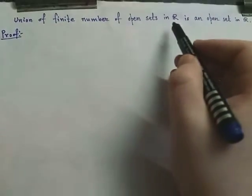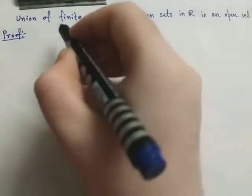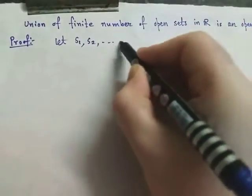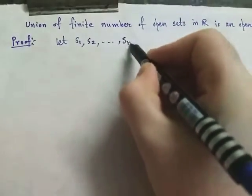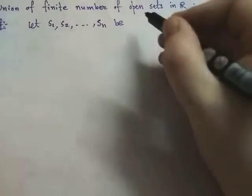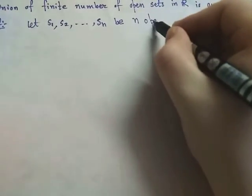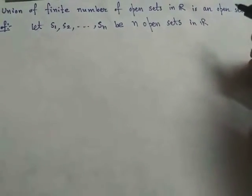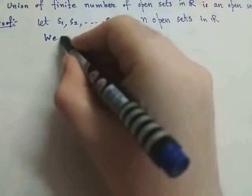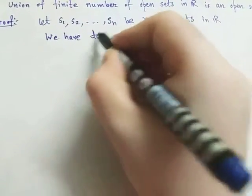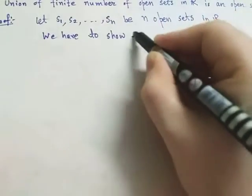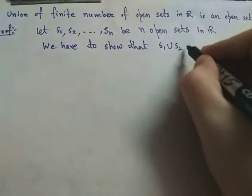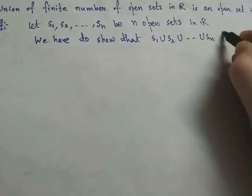Union of finite number of open sets in R is an open set in R — proof. Let S1, S2, ..., Sn be n open sets in R. We have to show that S1 union S2 union ... union Sn is an open set in R.